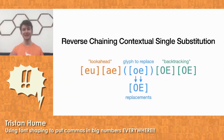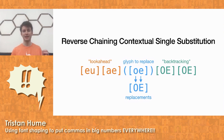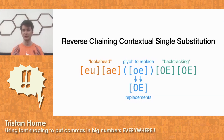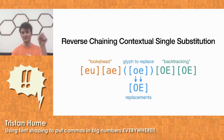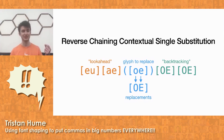Luckily, at the very end I found the reverse chaining contextual single substitution rule. This rule acts kind of like a certain type of regular expression where everything is a glyph class — similar to regex character classes — matching a set of glyphs in a specific position. There's a single position to replace, a class of possible glyphs and replacements, as well as lookahead and backtracking classes. This rule was originally designed for a type of Arabic calligraphy. Arabic is a right-to-left context, so to do left-to-right shaping it has to work from the end of the string to the beginning — which is exactly what I wanted.